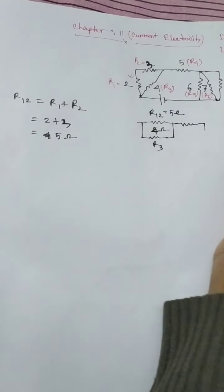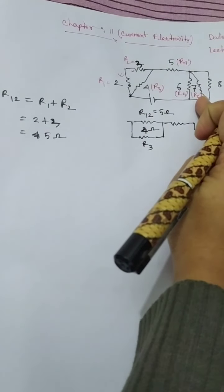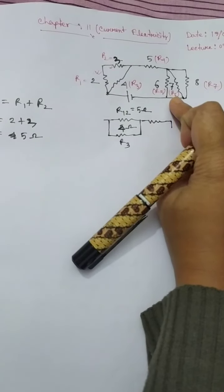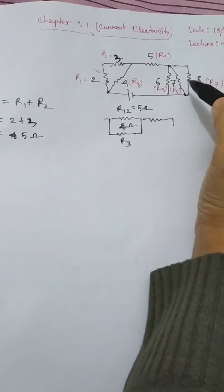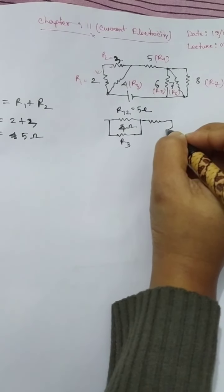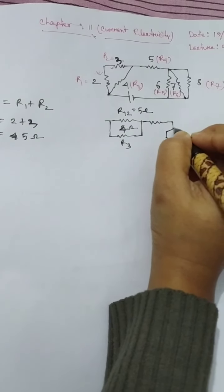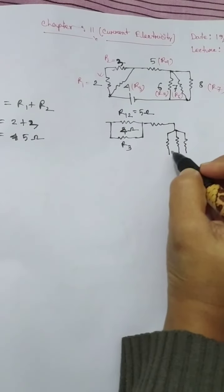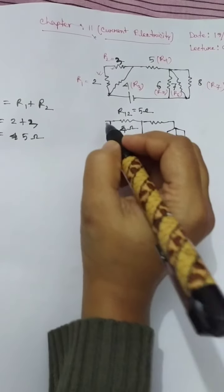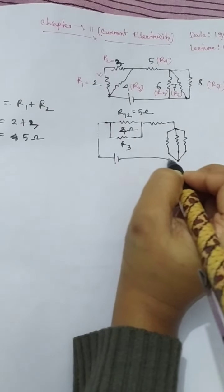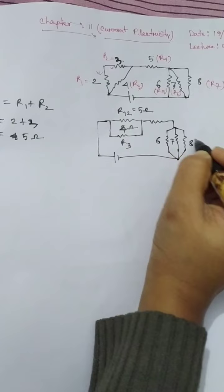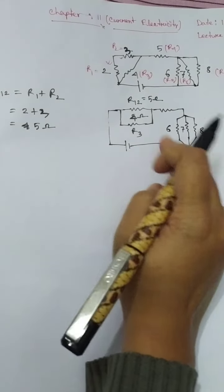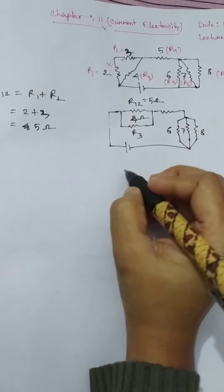For resistors R5, R6, and R7, the starting point is the same for all three and the ending point is also the same. Since both the starting and ending points are common for these three resistors, we can say that R5, R6, and R7 are connected in parallel. Instead of three separate resistors we can use a single equivalent resistor here.